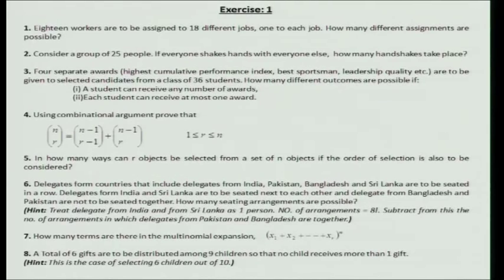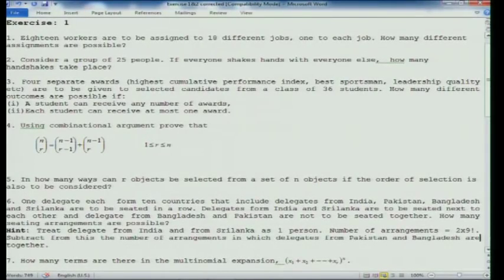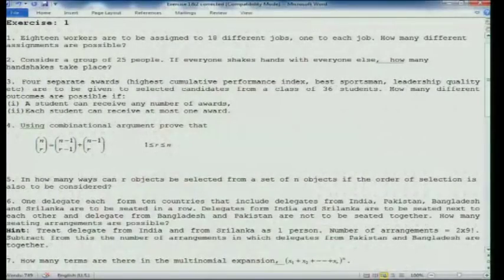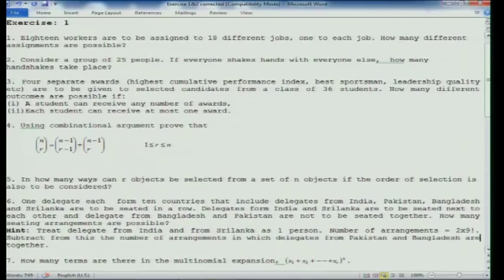You can also verify this algebraically by writing out the expressions for C(n−1, r−1) and C(n−1, r) and showing they add up to C(n,r). Question 5 we have already discussed: in how many ways can r objects be selected from n objects if the order of selection is also to be considered?